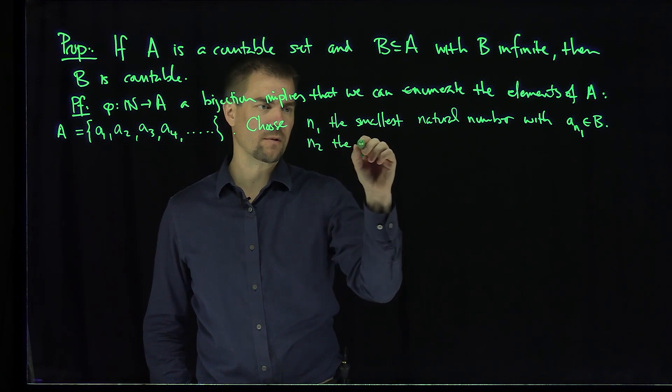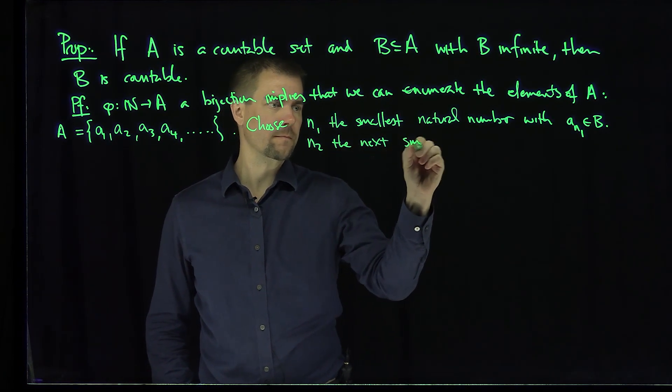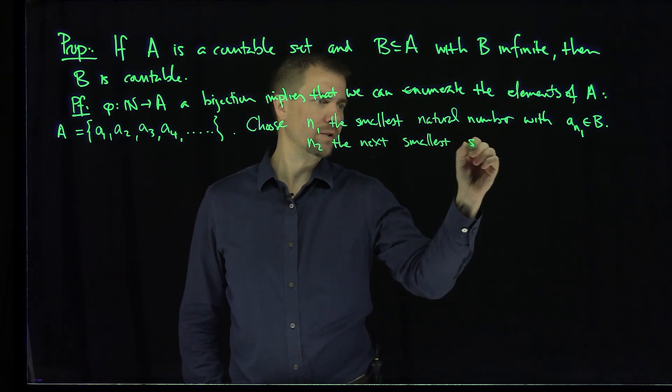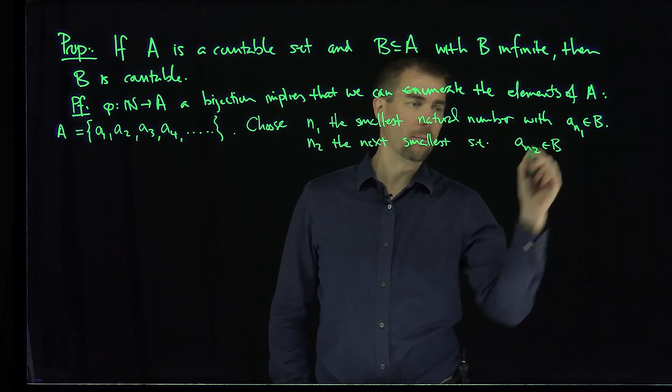N2 is the next smallest such that A_N2 is in B.